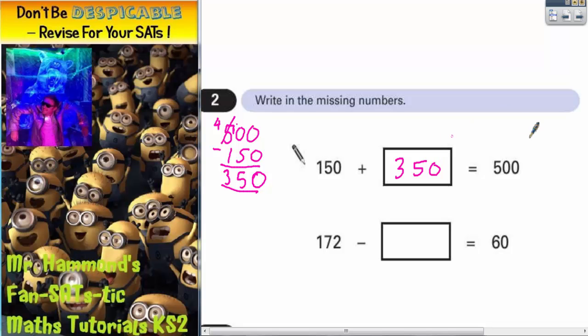Let's just double check that before we move on. So 150 add 350. Does it equal 500? 0 plus 0 is 0. 5 plus 5 is 10. Put your 0 in and carry 1. 1 plus 3 is 4, plus that 1 is 5. So that definitely is 350. We can tick that one.